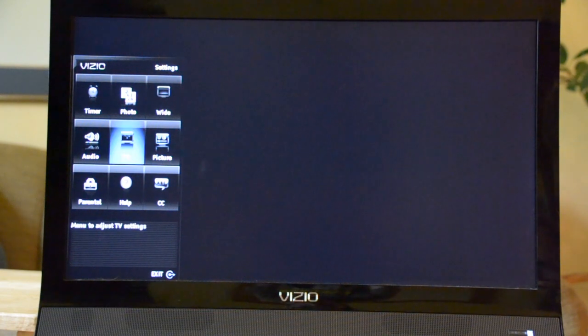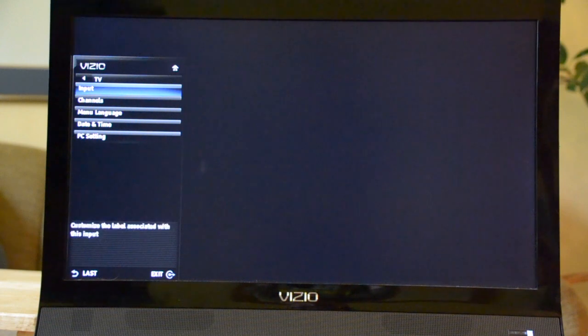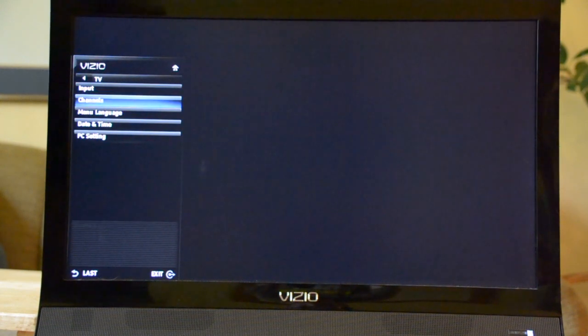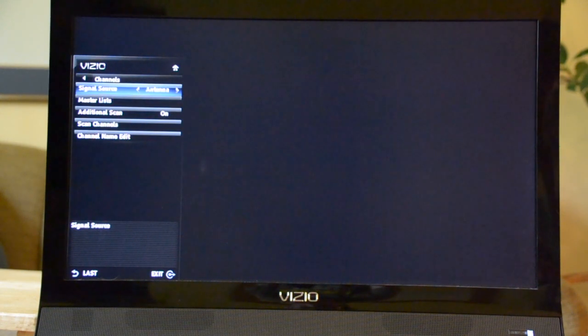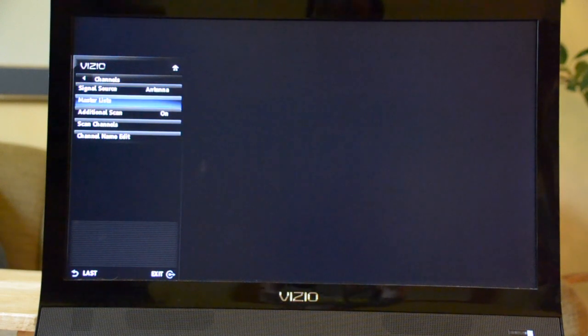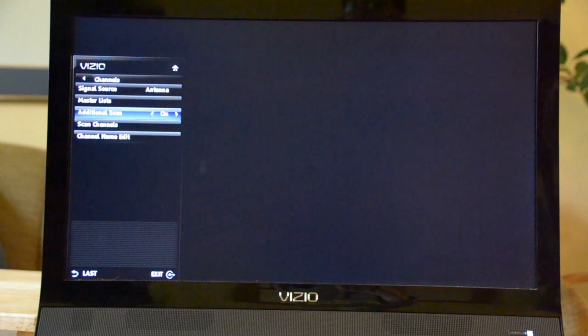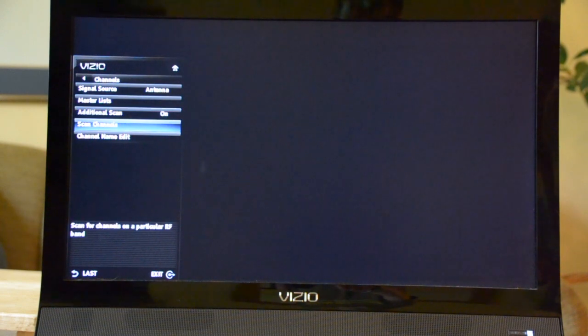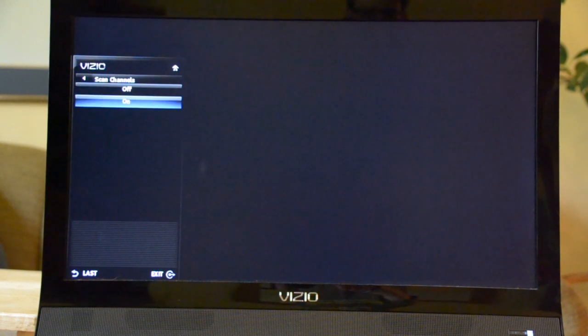In your TV setting, select channels. You'll find a signal source setting, which can be either cable or antenna. Set it for antenna. Now select scan channels and choose on.